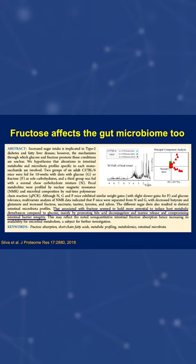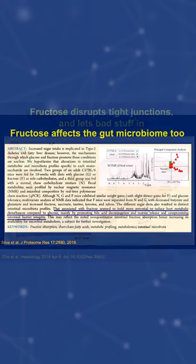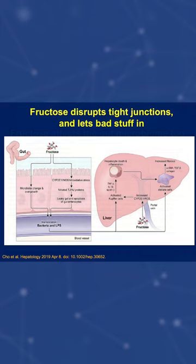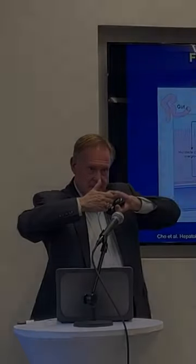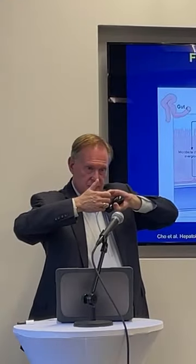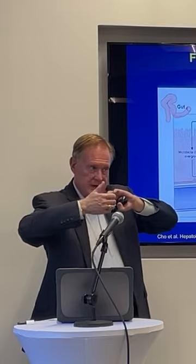Fructose alters intestinal barrier integrity because it nitrates those tight junction proteins and makes them unreliable. They're supposed to basically hold like this, but in response to sugar, they go like this.